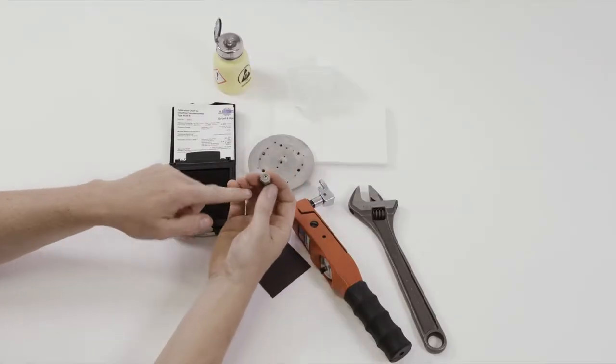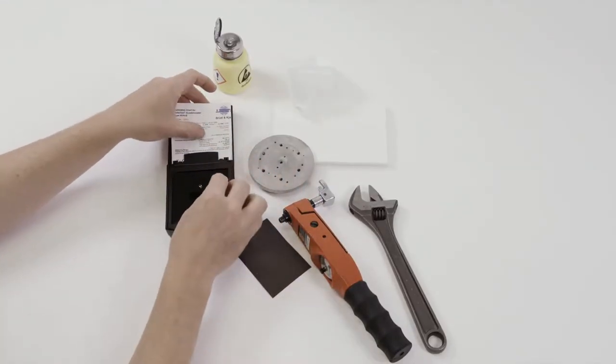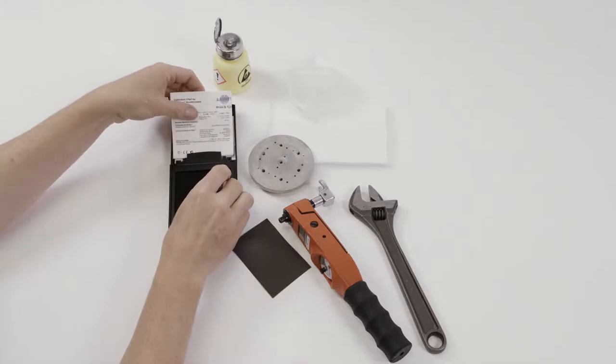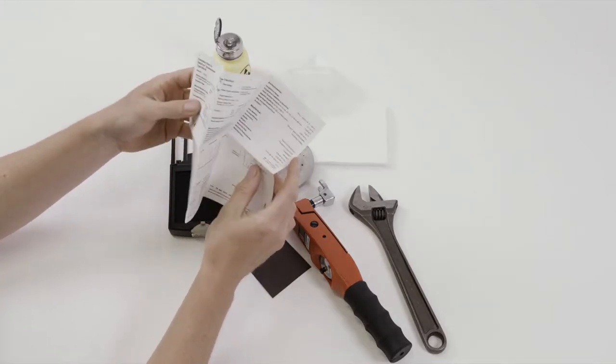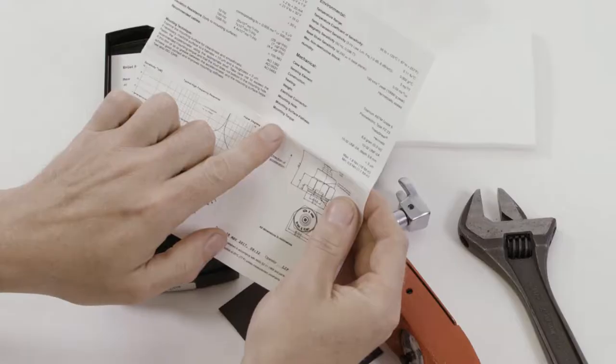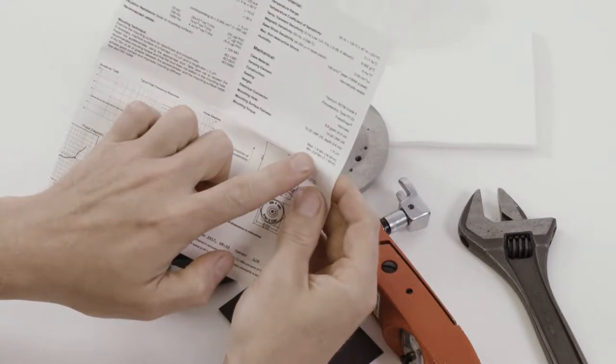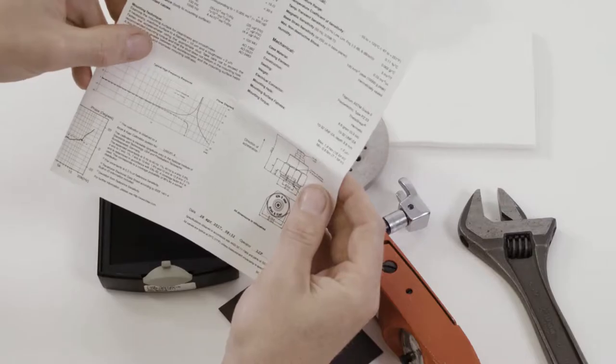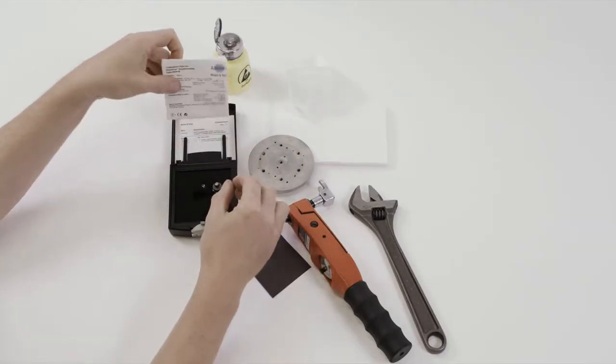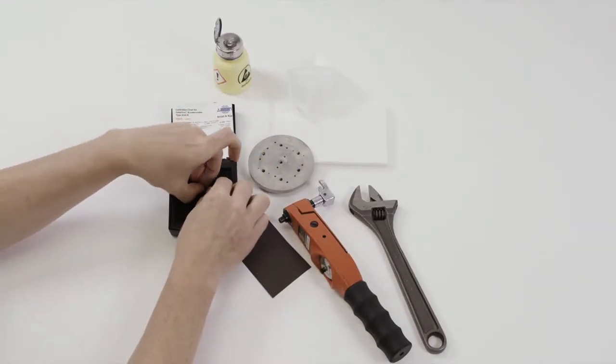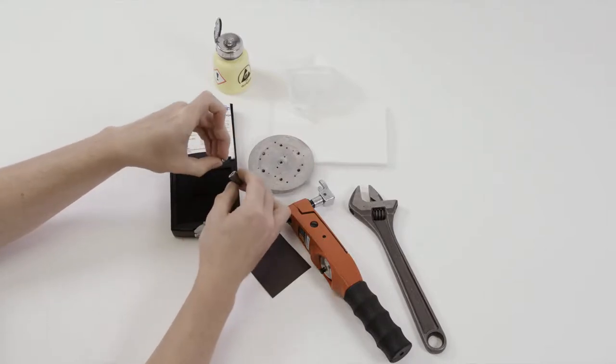For a stud-mounted accelerometer like 4534B, we have a specification for mounting torque on the calibration chart. Here a range between 0.8 and 1.8 Nm. When stud-mounting the accelerometer by using, for example, the supplied threaded stud into a threaded hole on a supporting structure.